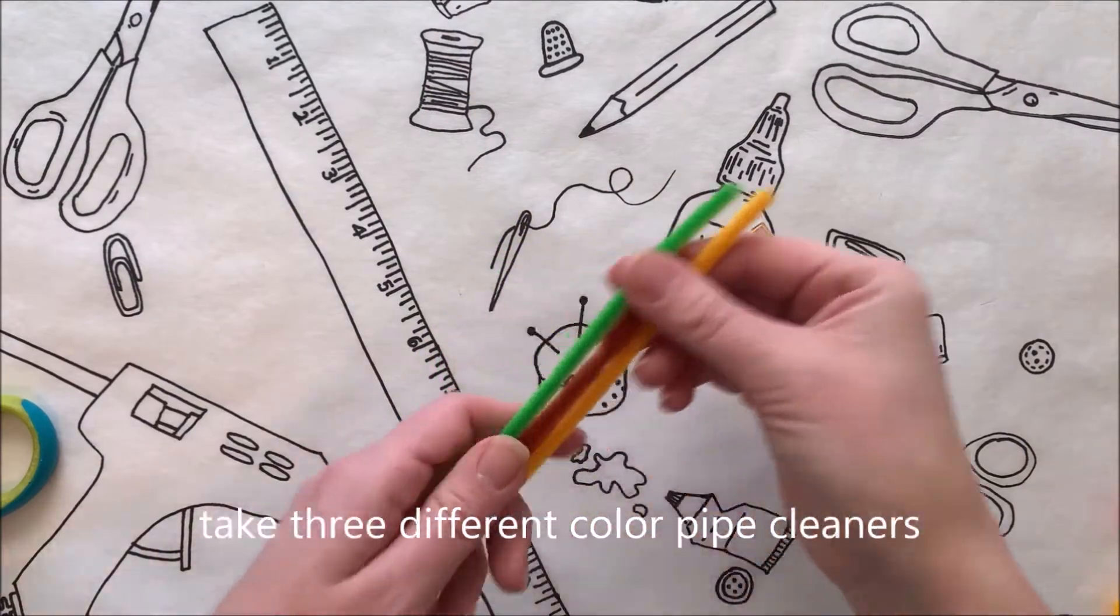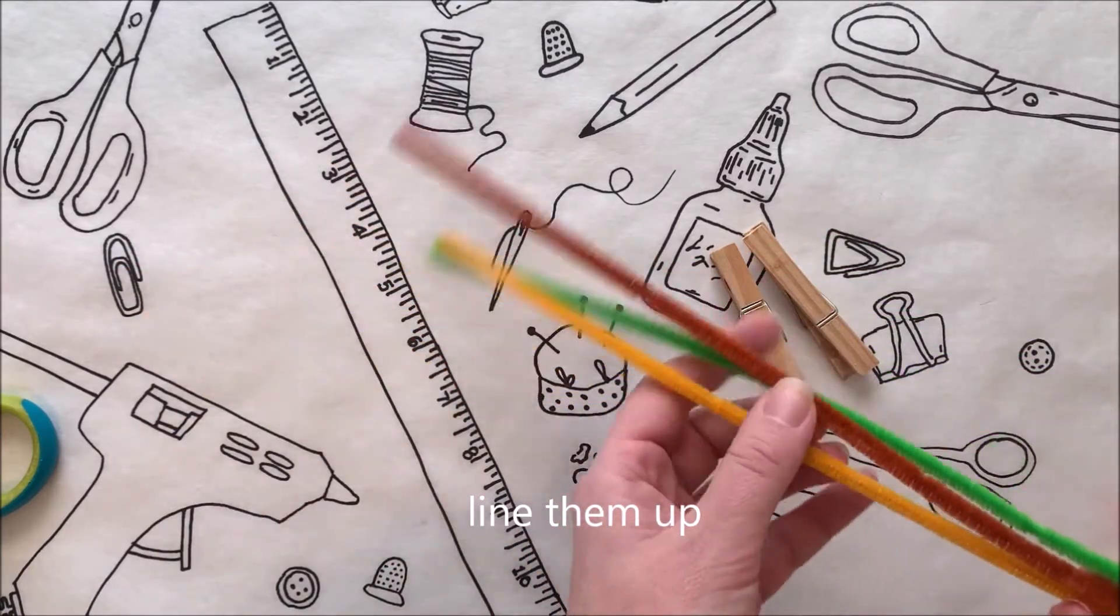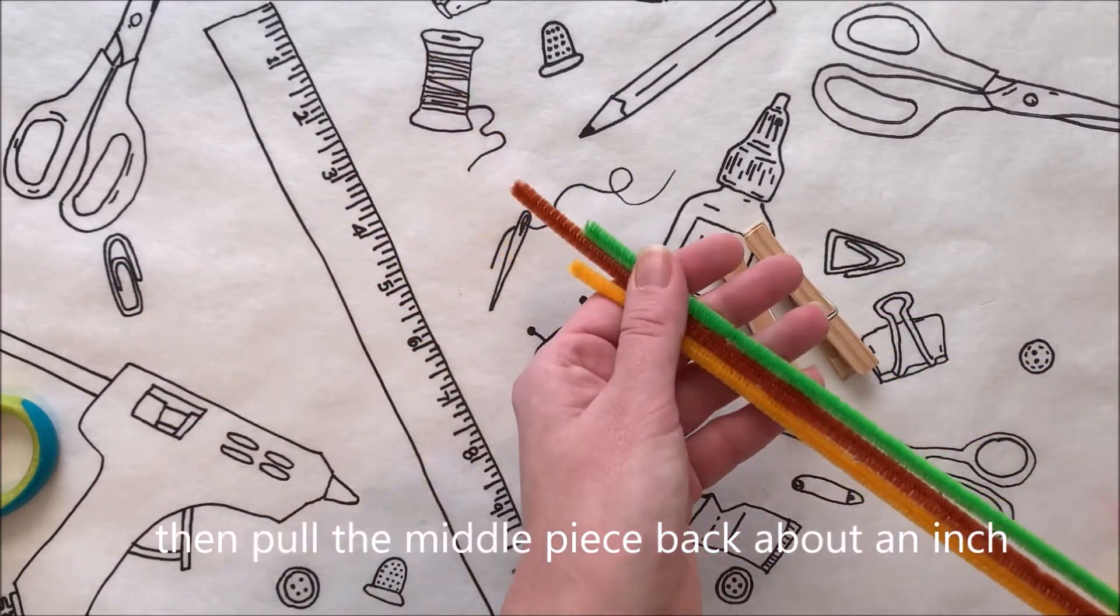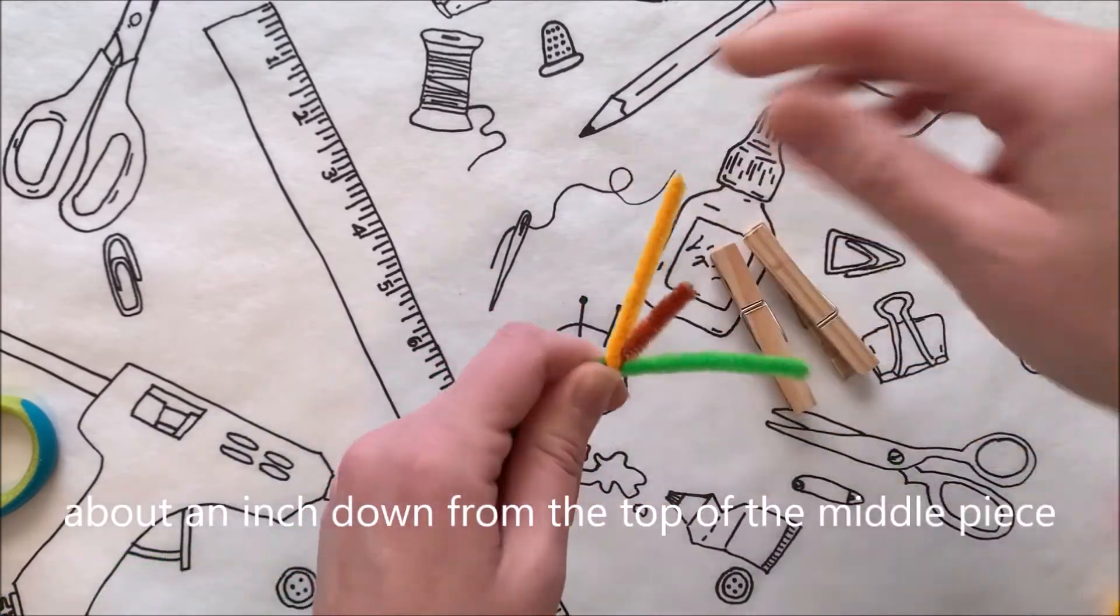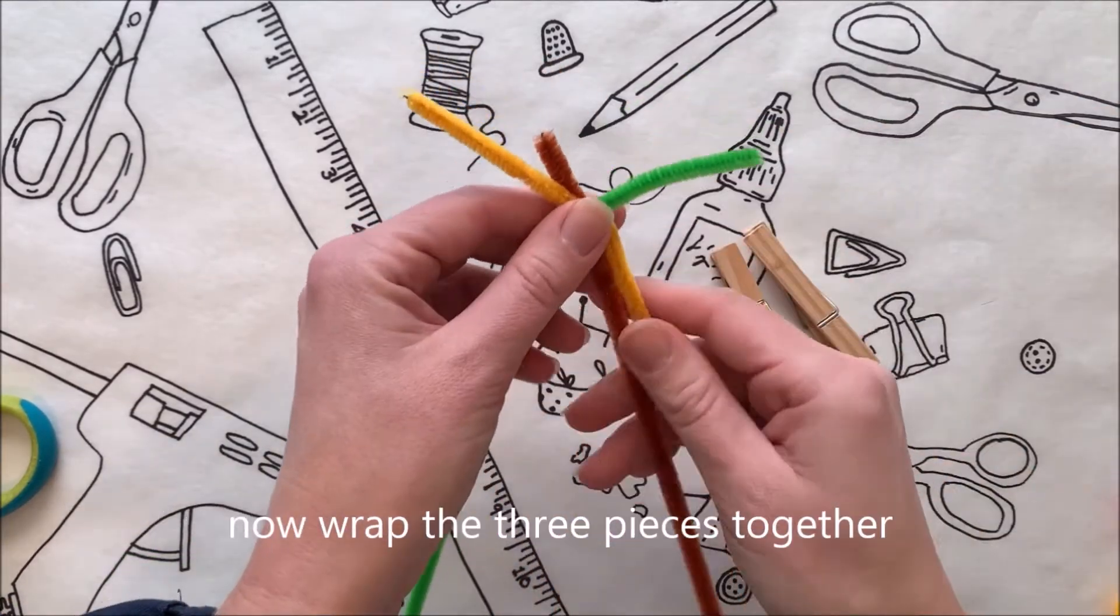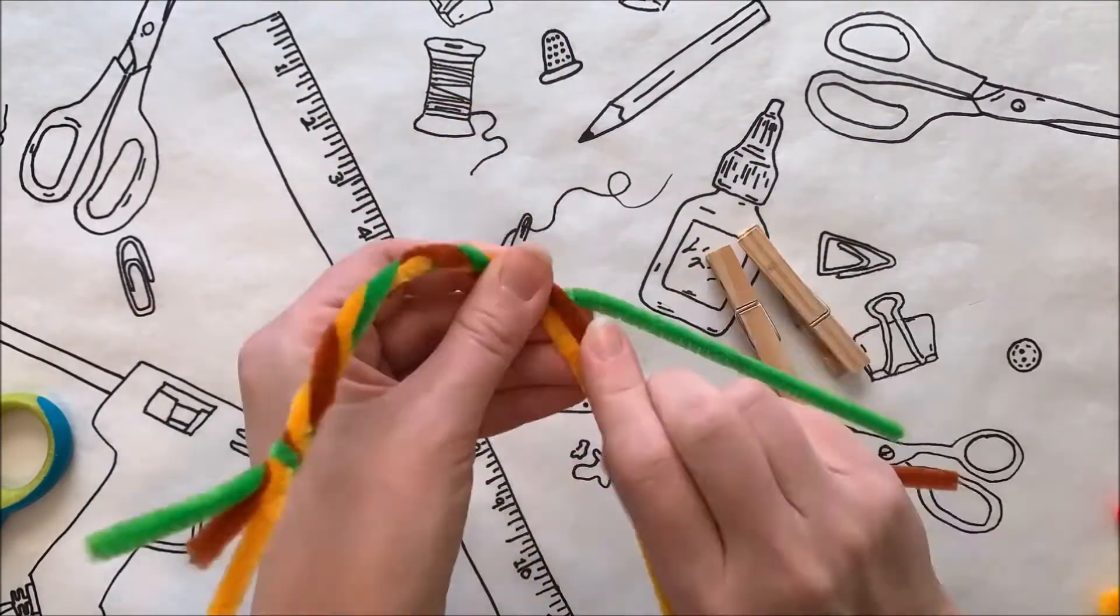For our garden snail, take three different color pipe cleaners, line them up, and then pull the middle piece back about an inch. Then on the opposite end, twist all three pieces together about an inch down from the top of the middle piece. Now wrap the three pieces together all the way down to the end.